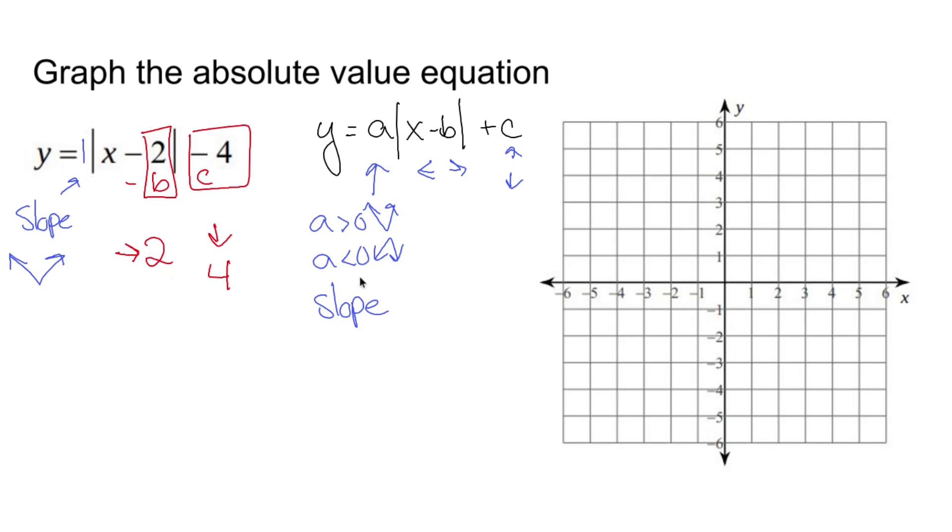Okay, so I go right two, I go down four, and I put a dot. My slope is positive one.